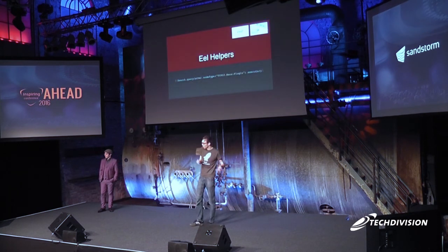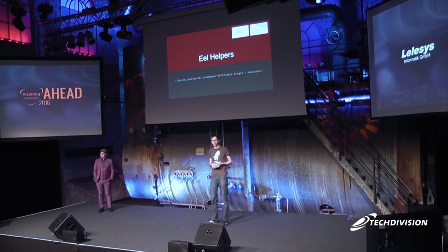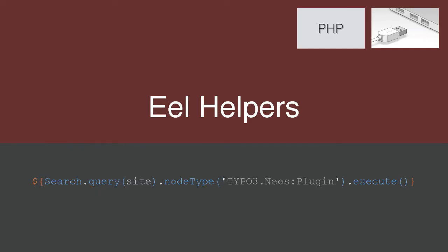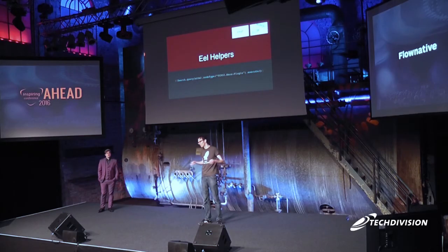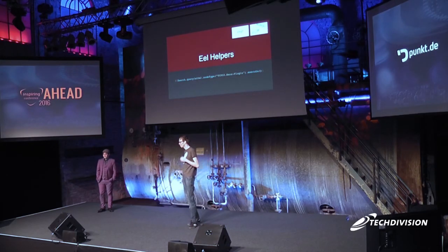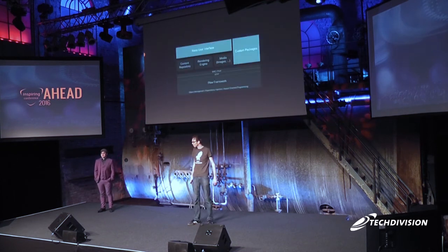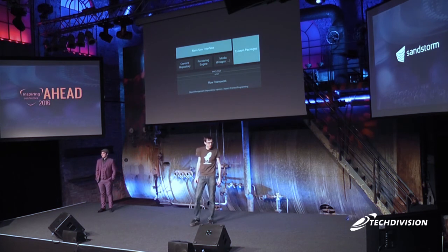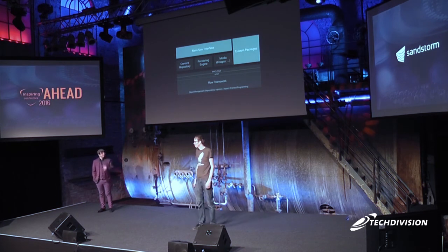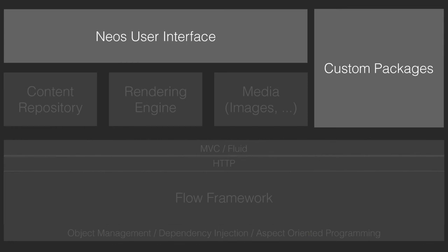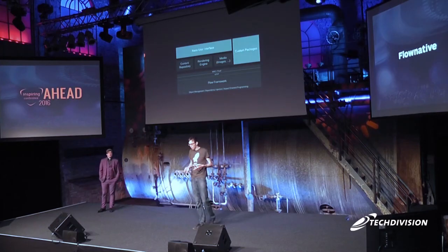One part of TypoScript is EEL — an expression language you've probably used if you've used the Elasticsearch or SimpleSearch package. It's essentially just a call of PHP methods, making it very easy to write your own helpers and get from the TypoScript world to the PHP world extremely easily. Then there is the NEOS user interface, which sits on top of the content repository, rendering engine, and media module, and you can extend it in many ways.